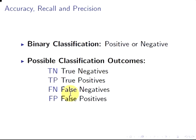The last two are more interesting. False negative: something that is actually positive but predicted to be negative. And false positive: something that's actually negative but predicted to be positive. We're going to use these outcomes for discussing accuracy, recall and precision.